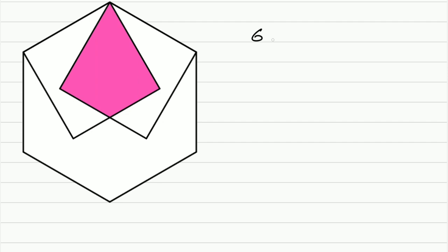First of all, let's calculate the size of each angle in a regular hexagon. So six sides minus two, times 180 over six — that's the formula. It will be equal to 120 degrees for each angle, so this angle here is 120 degrees.